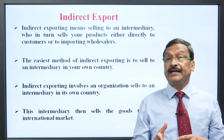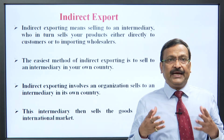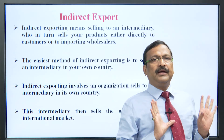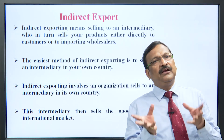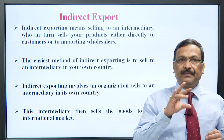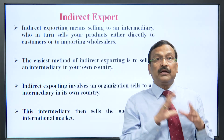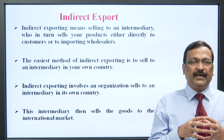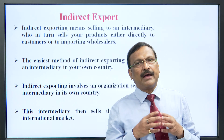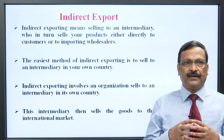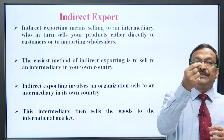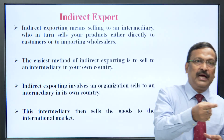The easiest method of indirect exporting is to sell to an intermediary in your own country — someone sitting in your own country. You give them your material and they export it for you. The intermediary then sells the goods to the international market, protecting you and providing payment in your country.